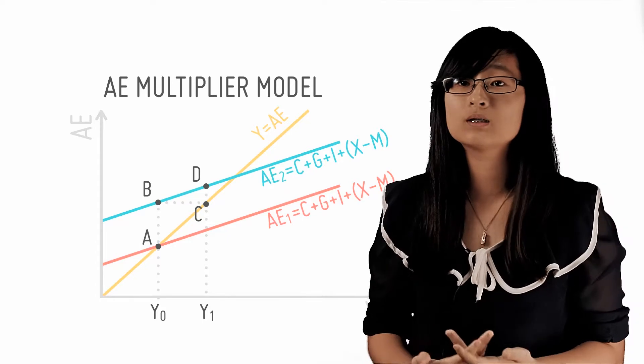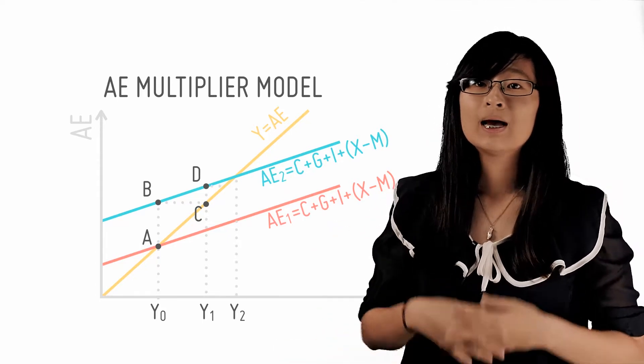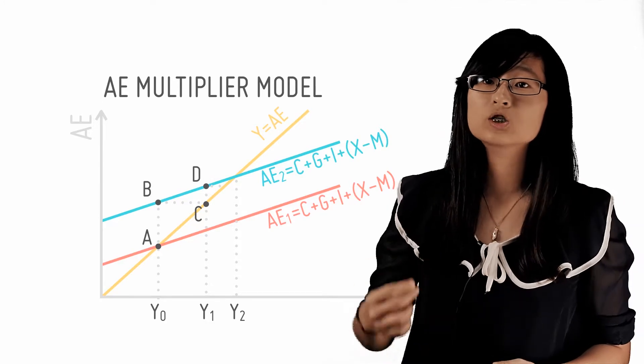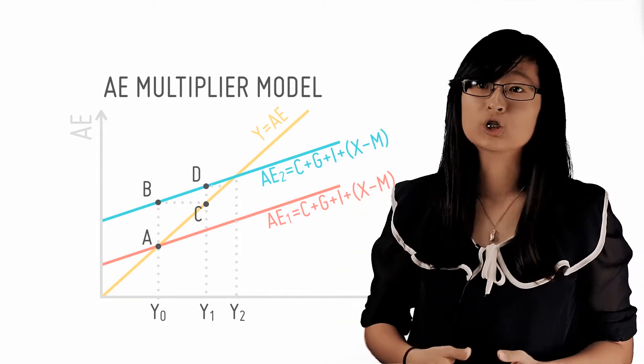They then again have an incentive to increase production, and so the process continues. At each new cycle, the additional induced consumption falls due to leakages that we've already mentioned.